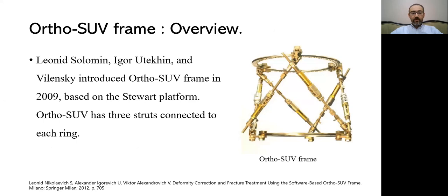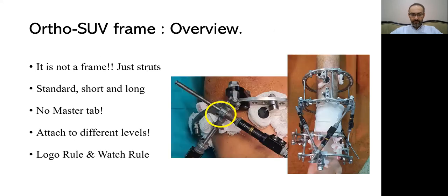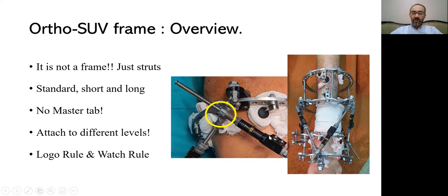Leonid Tolkman and others developed the Ortho SUV frame in 2009 based on the Stewart platform with some differences. The first difference is that it has three struts connected to each ring, not six as in TSF. Importantly, it is not a frame itself — it can be attached to any ring: TSF, TL-Hex, or standard Ilizarov. They are just six struts; you have three lengths — standard, short, and long. The short is needed for kids, the long for knee problems. There is no master tab, so you can start slightly to the right or left. You keep in mind that the logo should be looking toward you, then apply the 'watch rule': the first strut covered by the second is number one, then count counterclockwise.